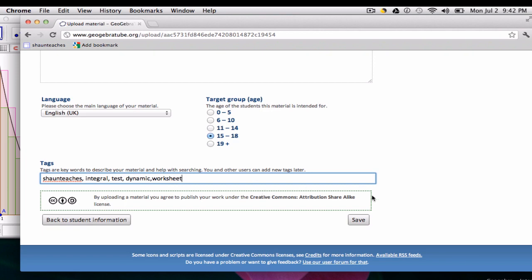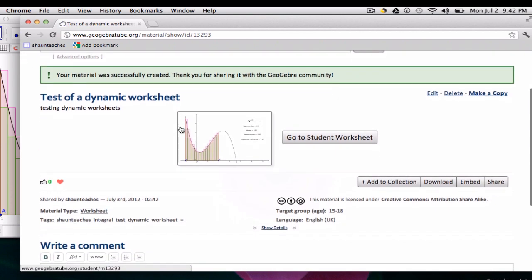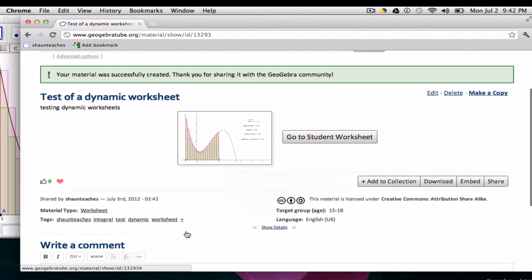Okay. And click save. And then this is what the community sees, right? It says who it's created by, which is me. What type of material is it? Here's the tags, the language, target group.